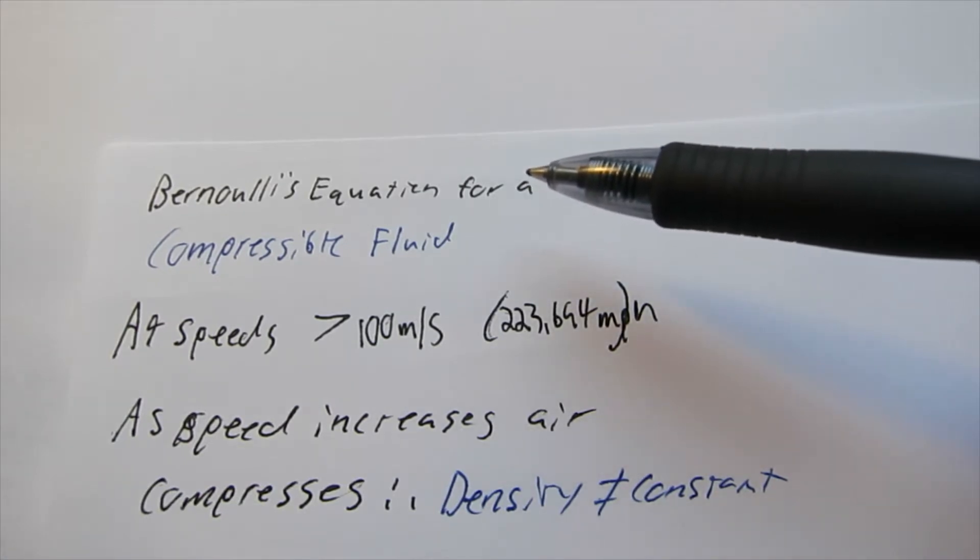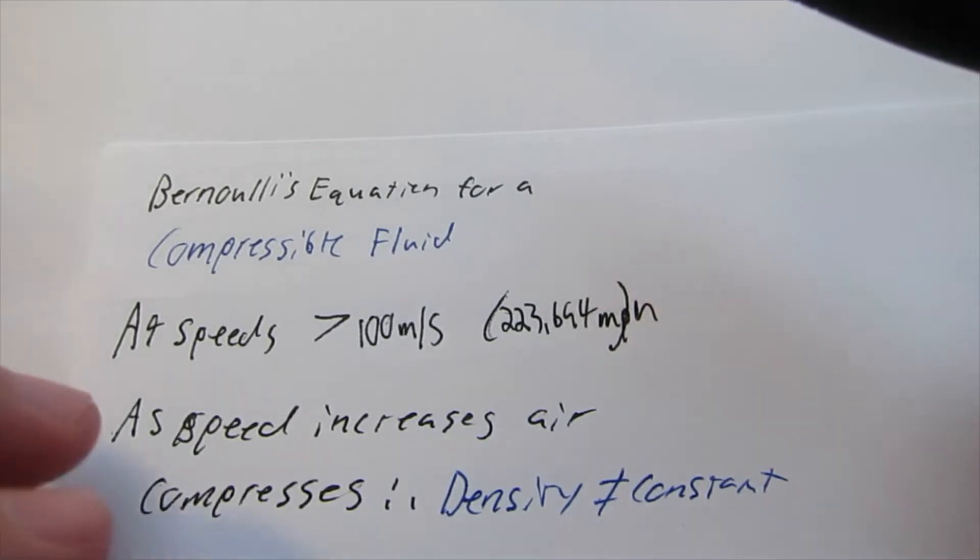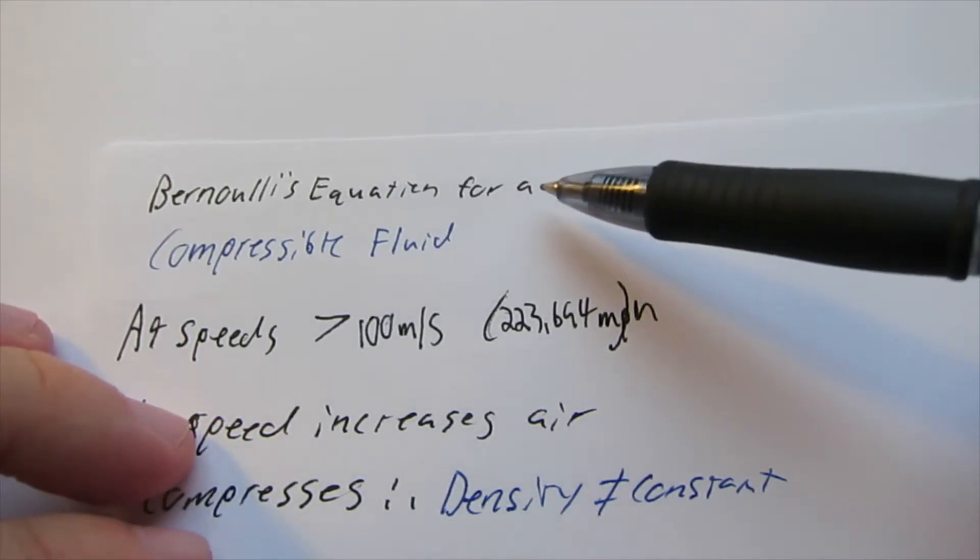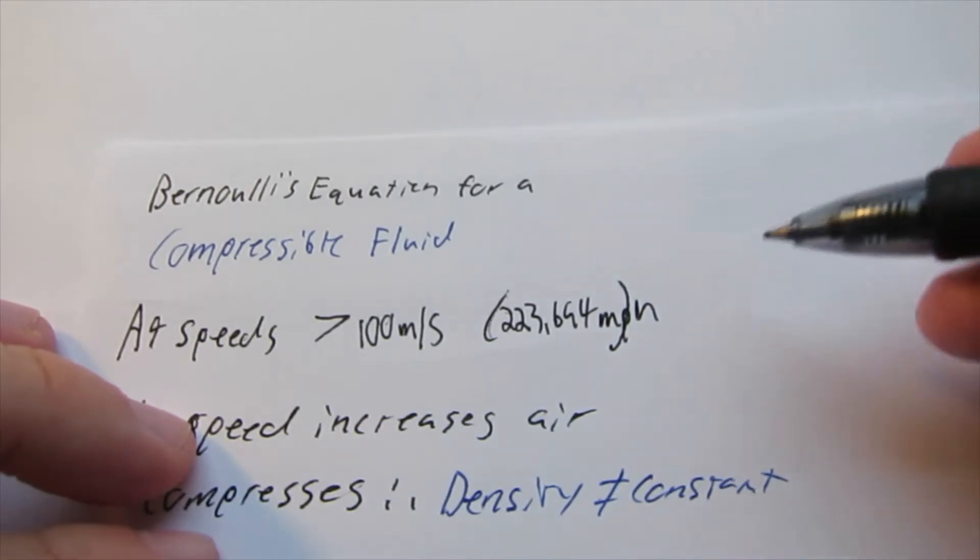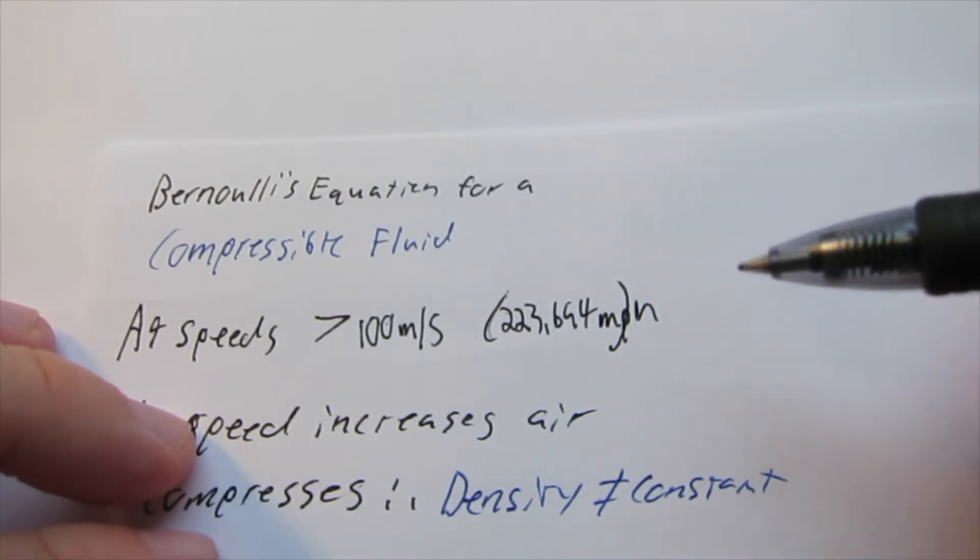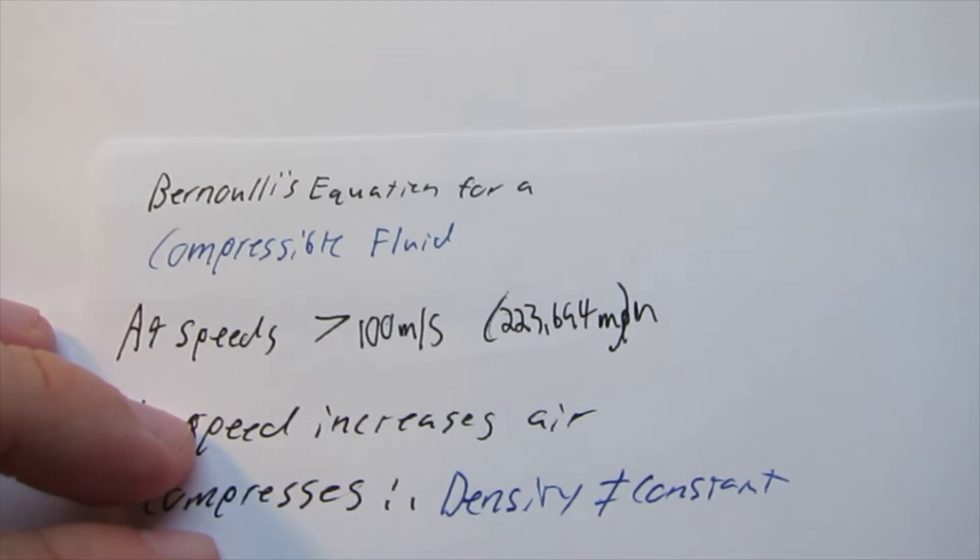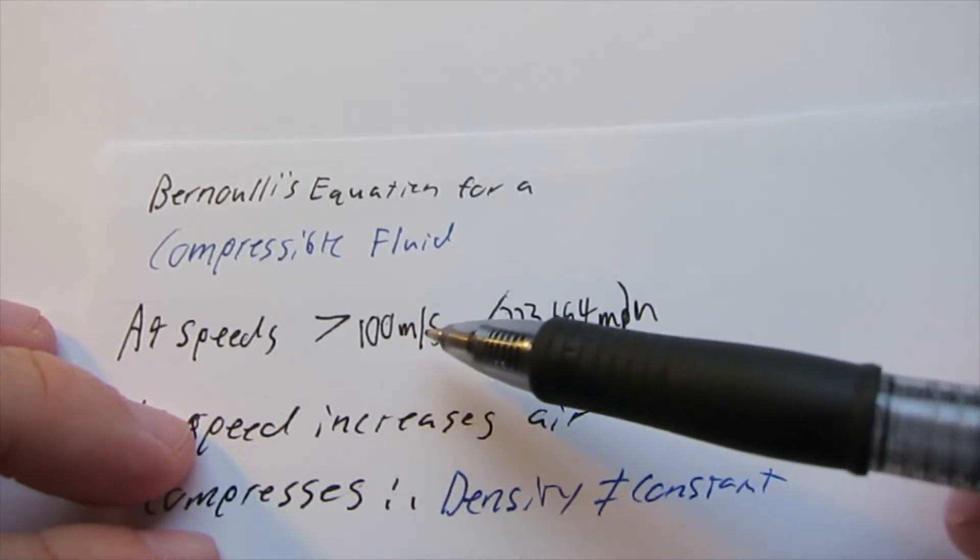So normally when you apply Bernoulli's equation in your fluid dynamics class, you're going to be dealing with it as it applies to an incompressible fluid. So driving your car, the air hitting that car can assume it's incompressible, but at speeds greater than 100 meters per second, or 223 miles per hour, we can't assume that the flow is incompressible.